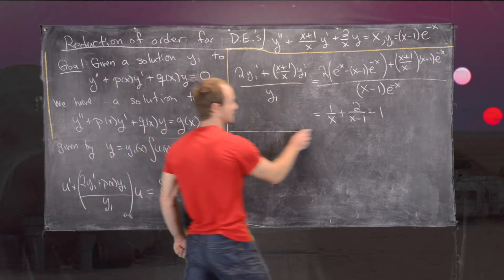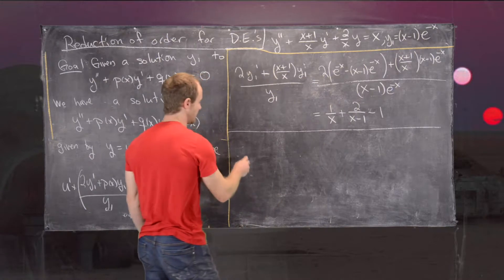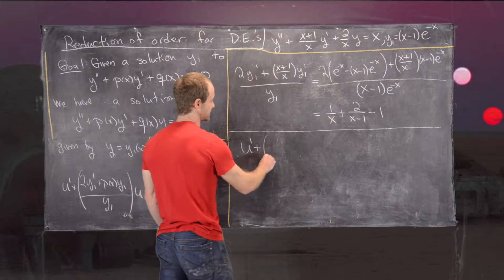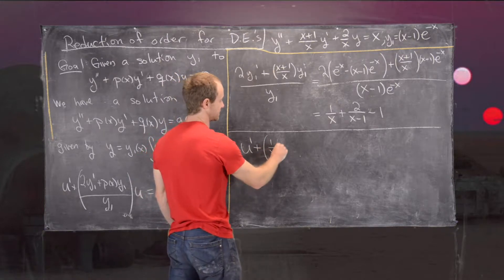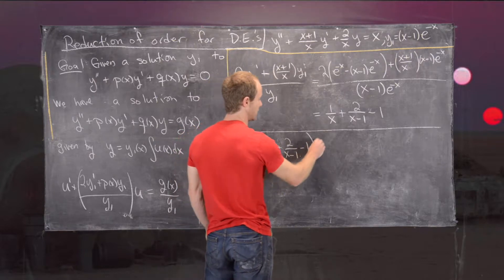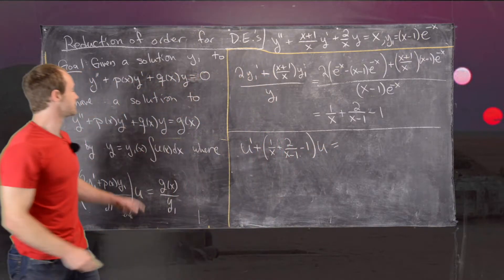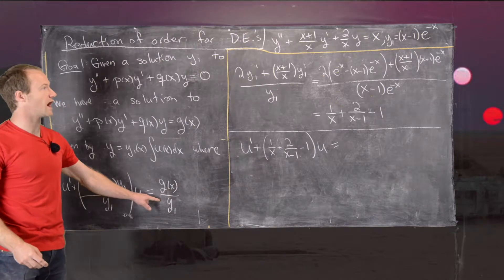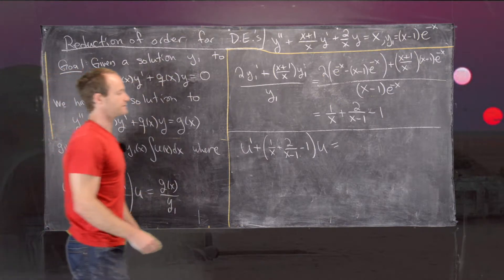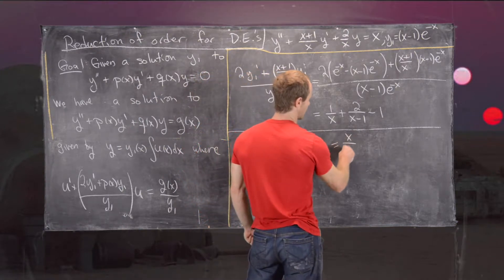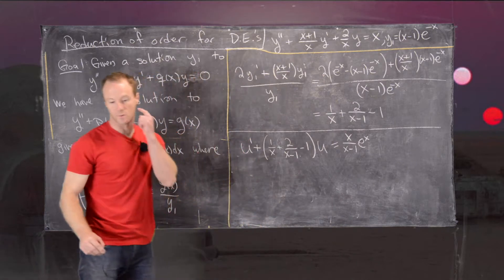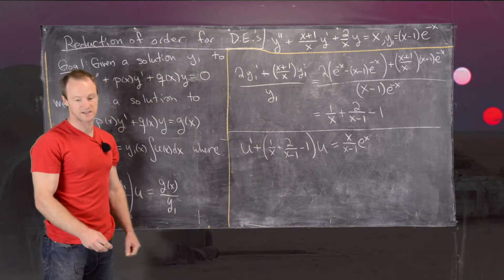That tells us that the first-order linear differential equation we need to solve is: u prime plus [1/x plus 2/(x minus 1) minus 1] times u equals g(x)/y1. Notice that is x divided by (x minus 1) times e to the x, since 1 over e to the minus x is e to the x.